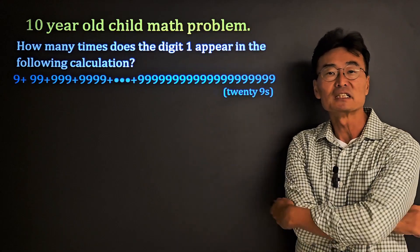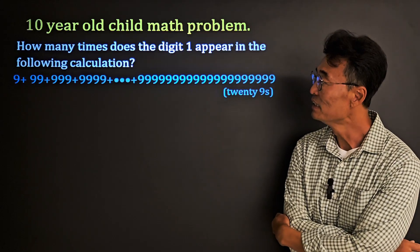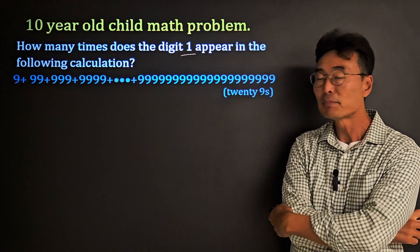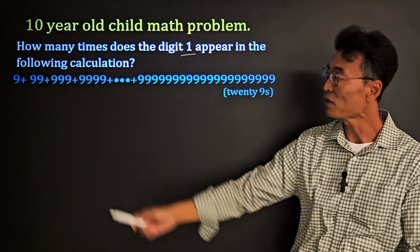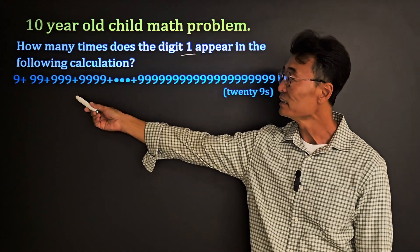This question was given to kids 7 to 10 years old. The problem reads: how many times does the digit 1 appear in the following calculation? So what they're asking is if you add up all the numbers 9, 99, 999...